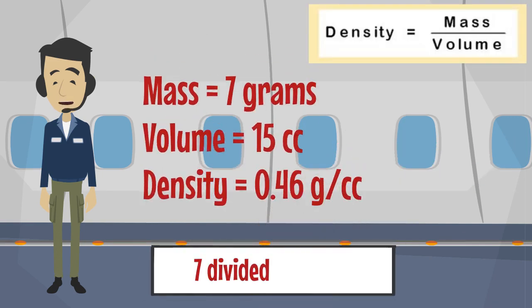So if density equals mass divided by volume, and our mass is 7 grams, and the volume is 15 cubic centimeters, then the density of the object is 0.46 grams per cubic centimeter.